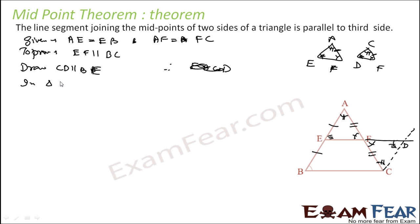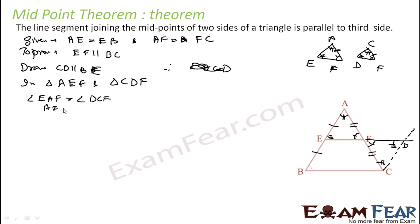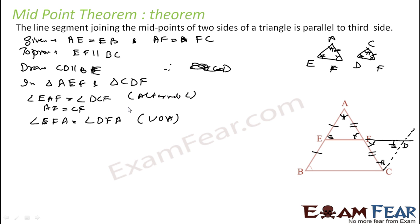Let me write this formally. In triangle AEF and triangle CDF: angle EAF equals angle DCF (alternate angles, since CD is parallel to BA); AF equals CF (given); and angle AFE equals angle CFD (vertically opposite angles). Therefore triangle AEF is congruent to triangle CDF by AAS. Since they are congruent, AE equals CD.